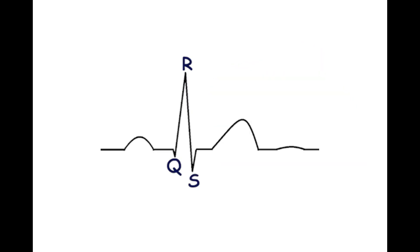The Q, R, and S waves form the QRS complex. The Q wave is an initial negative displacement of the QRS complex. The R wave is any positive displacement of the QRS complex. The S wave is a negative deflection that follows the R wave.